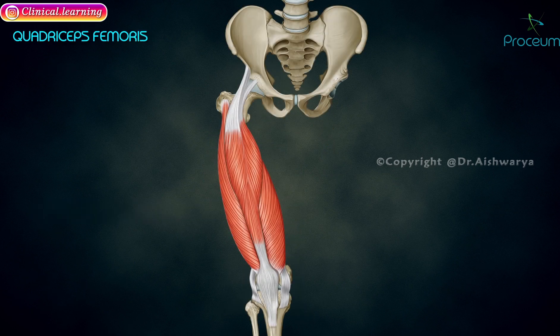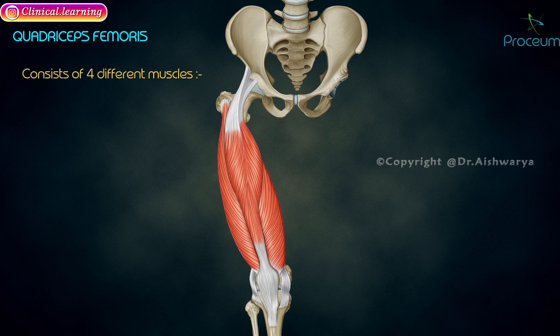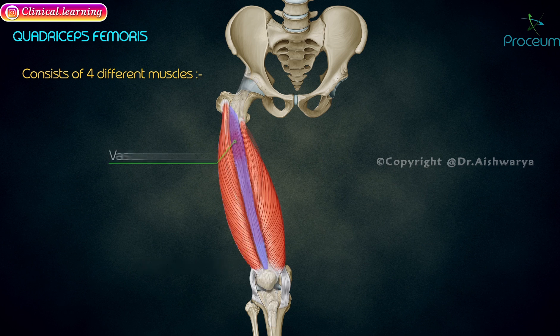Quadriceps femoris. The quadriceps femoris is the largest muscle in the body and is the main extensor of the knee joint. It consists of four different muscles: rectus femoris, vastus lateralis, vastus intermedius, and vastus medialis.